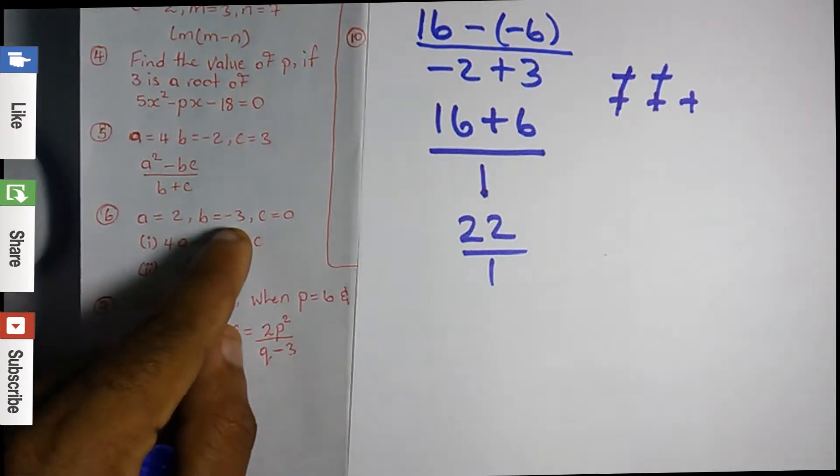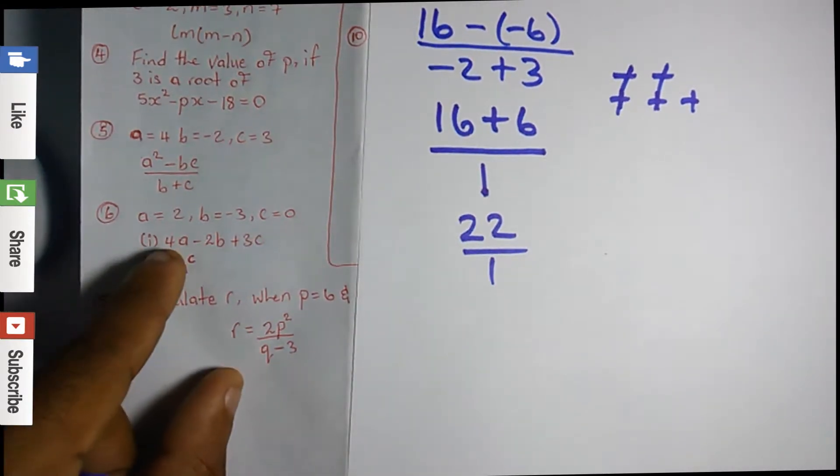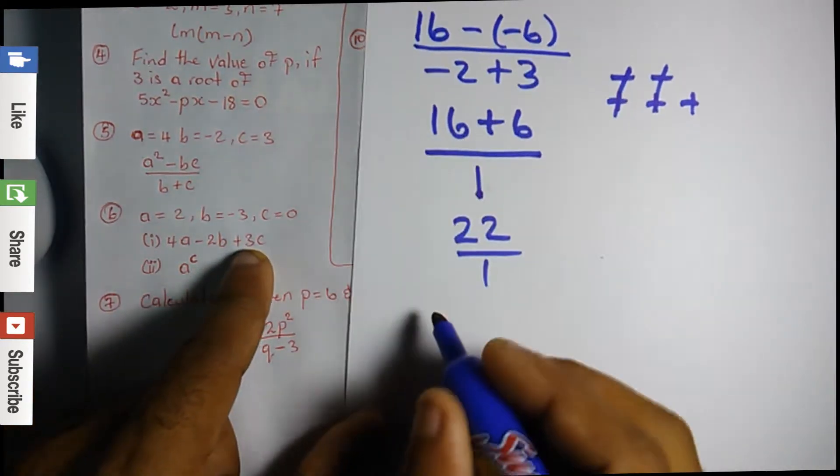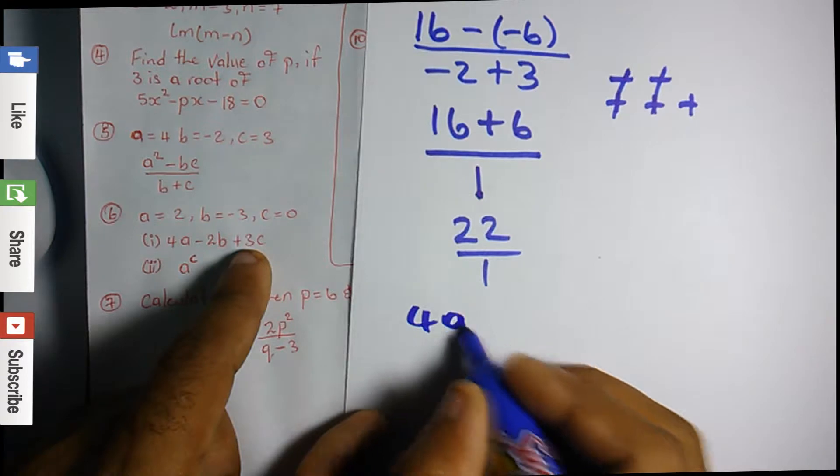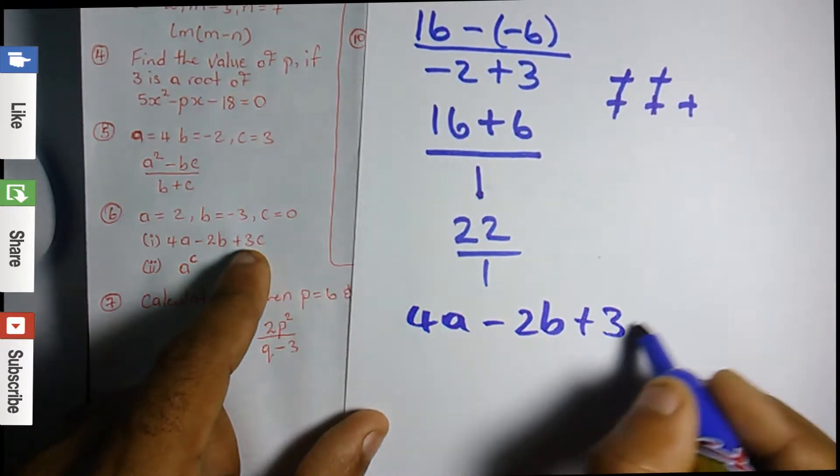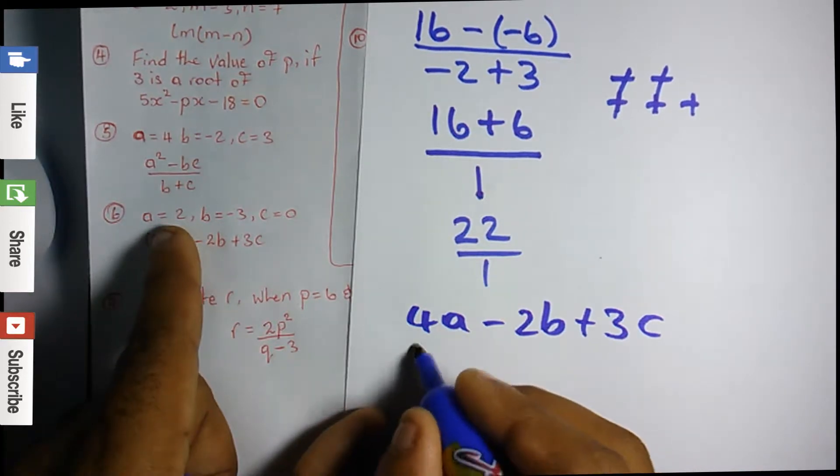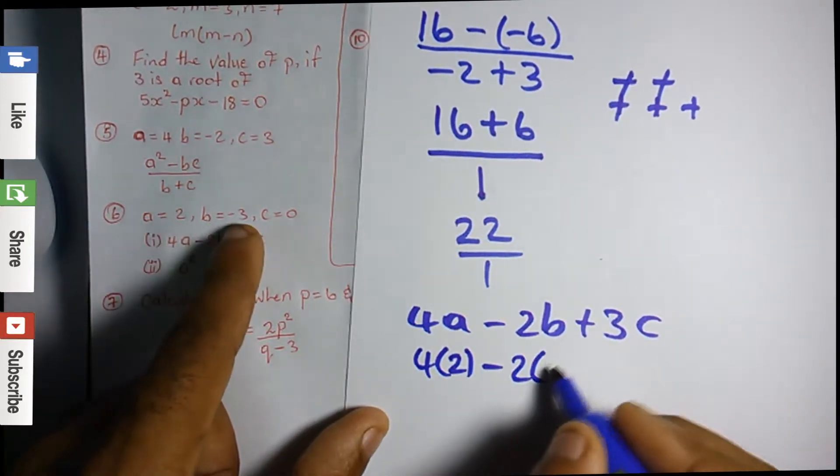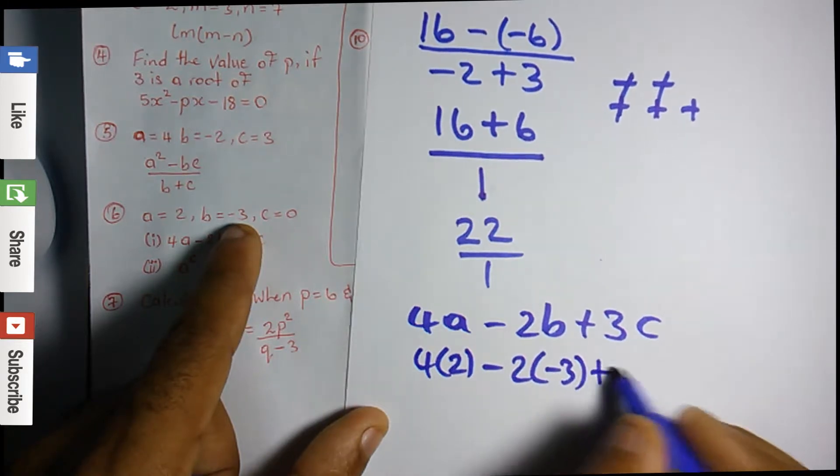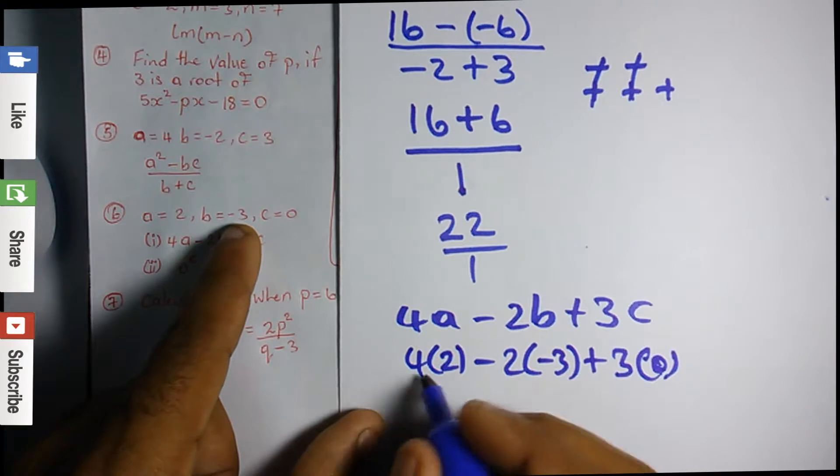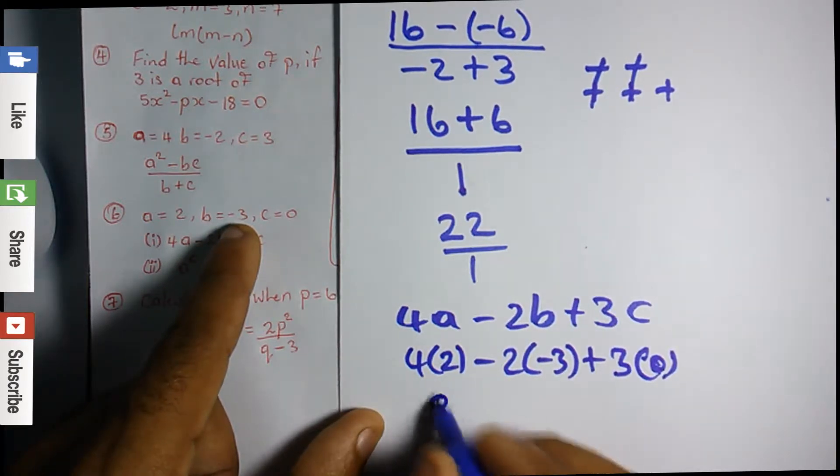Next we have a = 2, b = -3, c = 0. We're supposed to solve 4a - 2b + 3c. Remember a is 2, so it's 4 times 2 minus 2 times b which is -3, plus 3 times c which is 0. So 4 times 2 is 8.